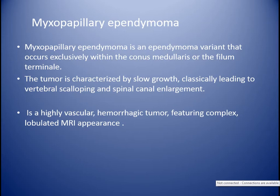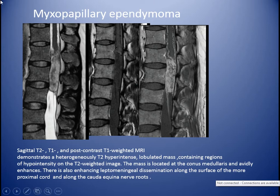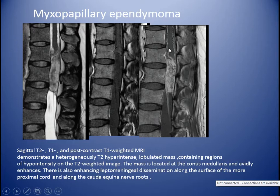Myxopapillary ependymoma is an ependymoma variant that occurs exclusively in the lower cord or conus medullaris and filum terminale. The tumor is characterized by slow growth, with classic scalloping of the vertebral body and spinal canal enlargement. It is a highly vascular hemorrhagic tumor with complex MRI appearance. Sagittal T2, T1, and post-contrast T1 show a lobulated complex hypointense mass on T1 located at the conus medullaris with enhancement and leptomeningeal dissemination along the cord surface and cauda equina nerve roots.